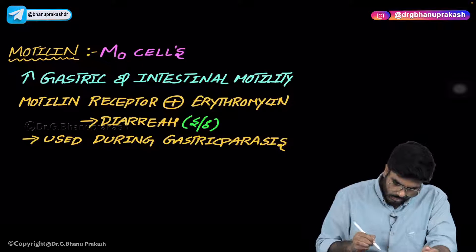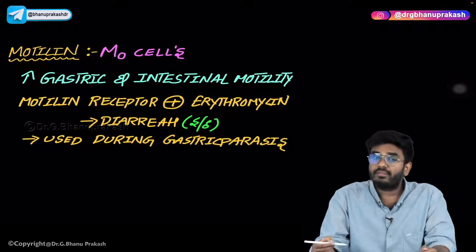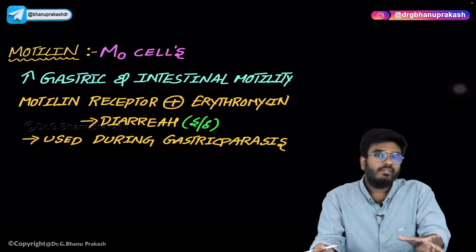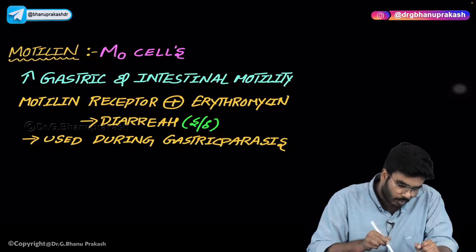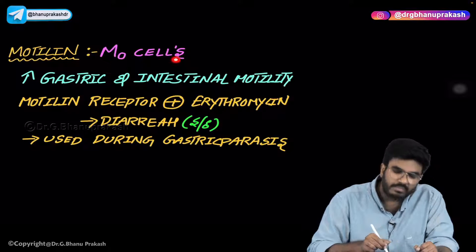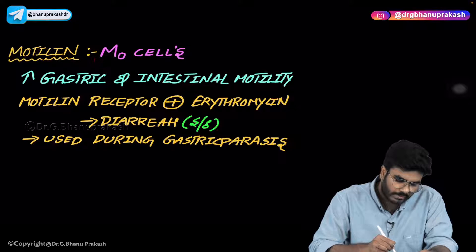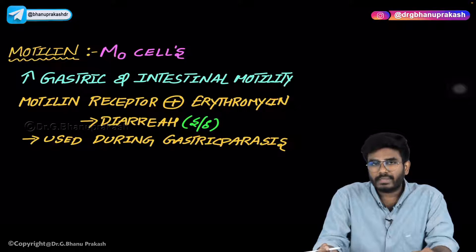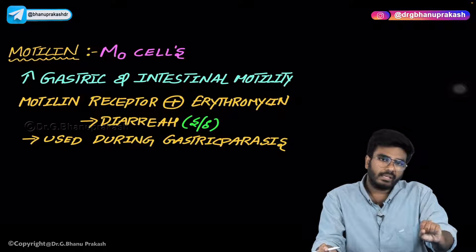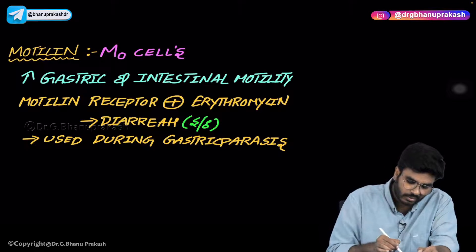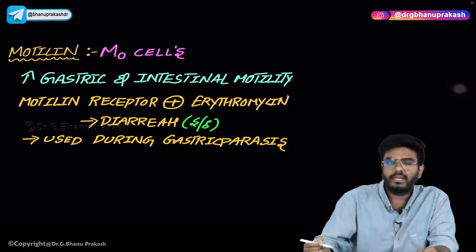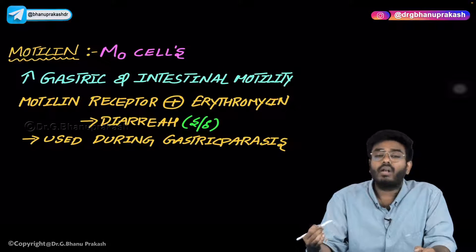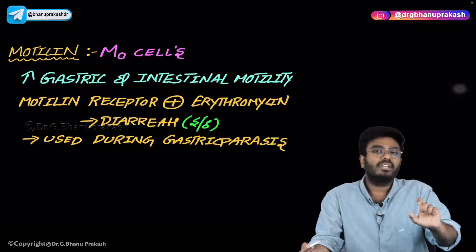Now let's discuss motilin. What is motilin, where is it produced, and how can we correlate this GI hormone motilin with pharmacology? Motilin is produced from M0 cells. M0 cells are the ones producing motilin. As the name suggests — motilin — it relates to movement of the GIT. It increases gastric and intestinal motility.